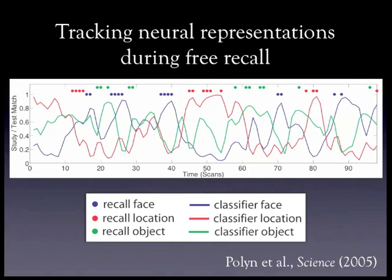Whenever you see multiple dots of the same color in a row, that's the person performing category clustering — remembering a number of items from the same category in a burst. It looked to us like the category estimates were ramping up even prior to the person discovering that first item in their memory. To characterize this, we carried out an event-locked averaging analysis in which we looked at all of the first responses from a given burst — a given set of same-category responses — and combined responses from all three categories.